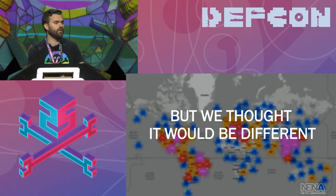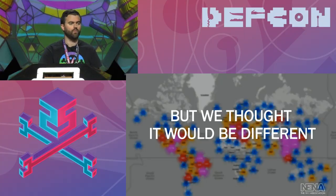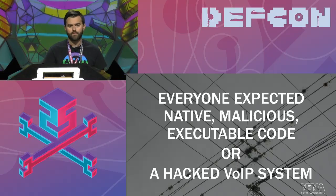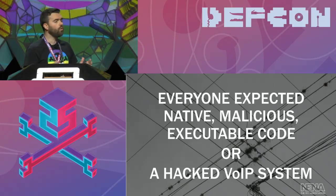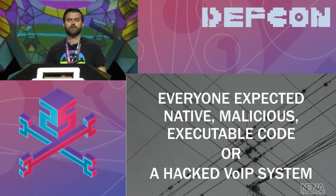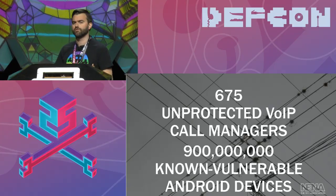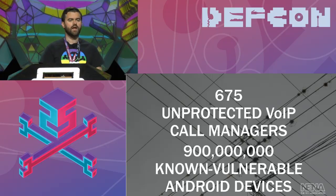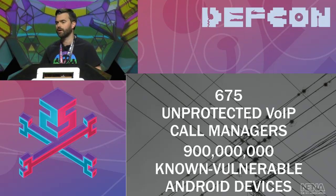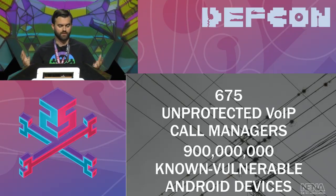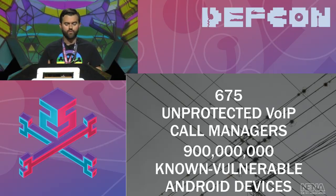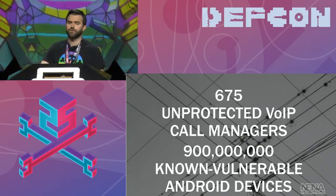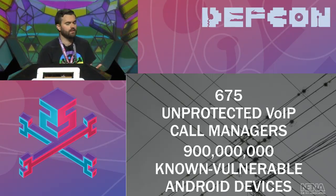But we never thought it would happen the way it ultimately did. We were focused on things like Android malware, geofencing, and so on. What we really expected was that the first 9-1-1 distributed TDoS attack would come from native malicious code executable on a device. The other big scenario that kept me awake was an enterprise call manager getting popped. I did a quick Shodan search and found 675 unprotected enterprise call managers sitting on the Internet just in North America. Any one of those boxes has far more traffic origination capability than even the biggest 9-1-1 centers can absorb. We also knew there are almost a billion known-vulnerable Android devices with legacy operating systems no longer being patched.